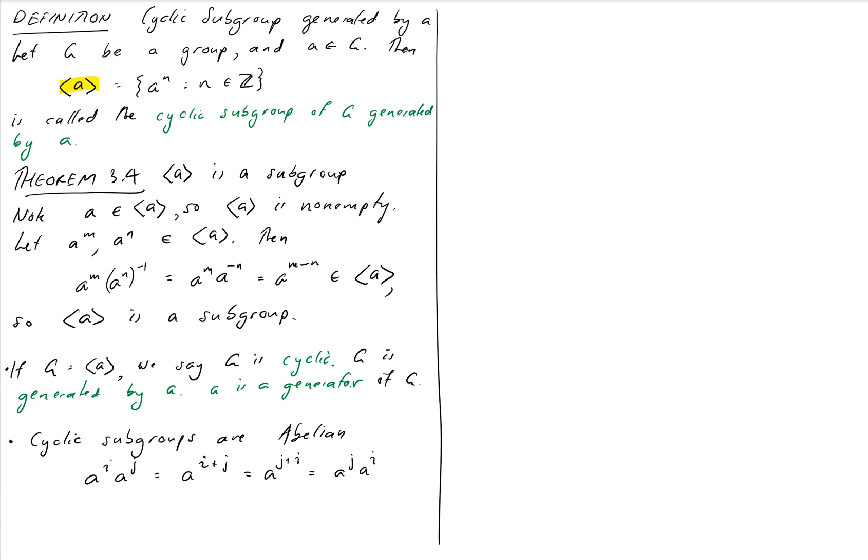Even if we're working in a group where the operation is not commutative, say matrices, any cyclic subgroup is still going to be abelian no matter what.